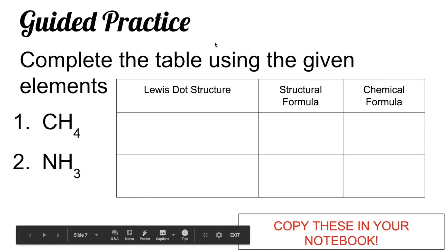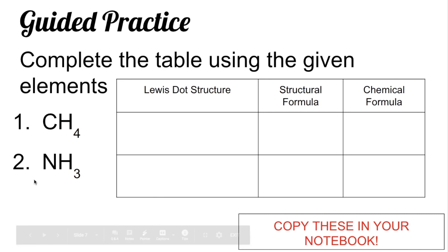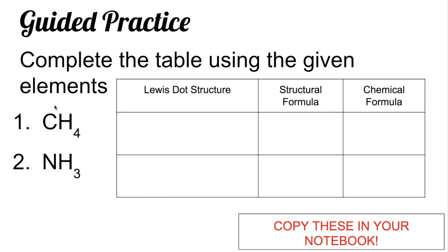Now we go to your guided practice. Complete the table using the given elements. Number one, you have CH4. For CH4, you have one carbon atom and four atoms of hydrogen. We write the Lewis dot structure of each atom. Carbon belongs to group 4A, so it should have four valence electrons — that's 1, 2, 3, 4.